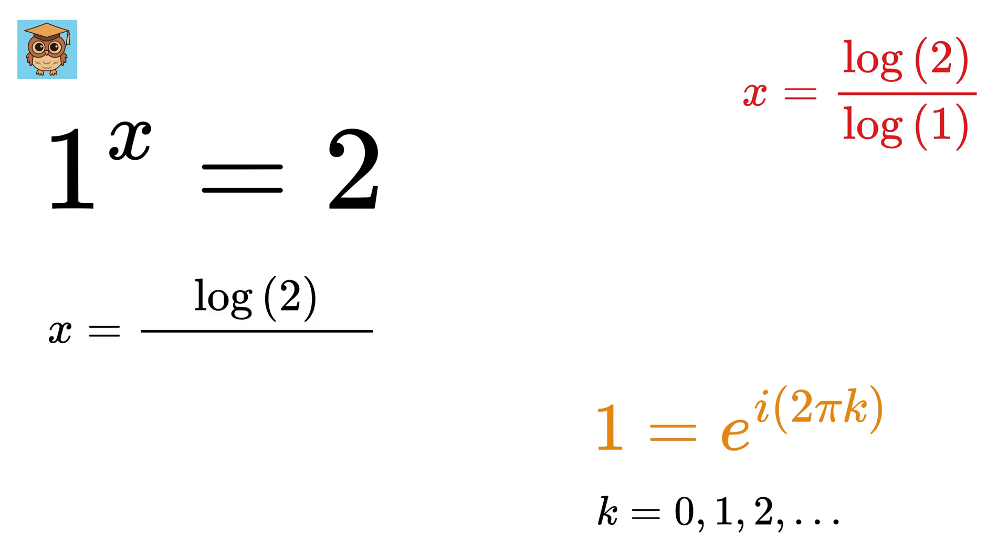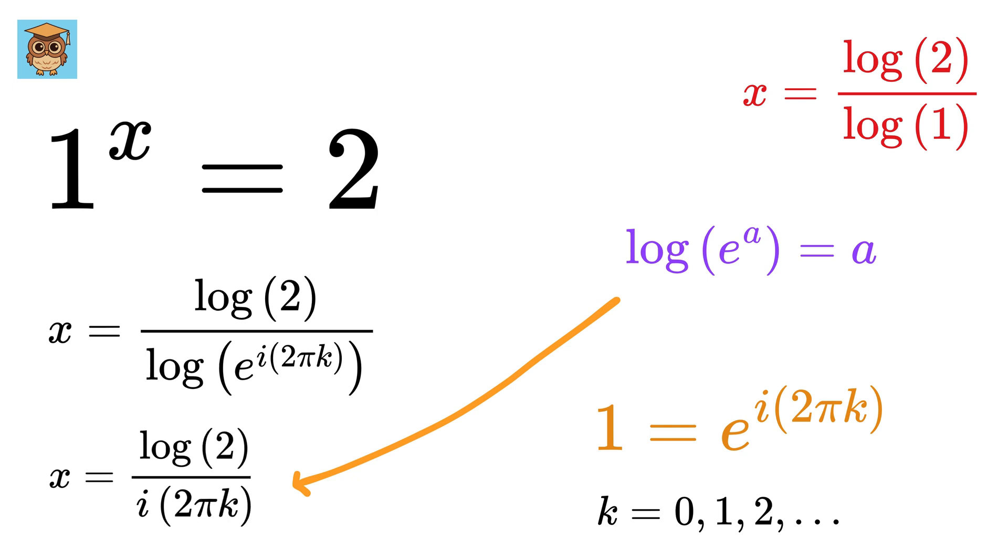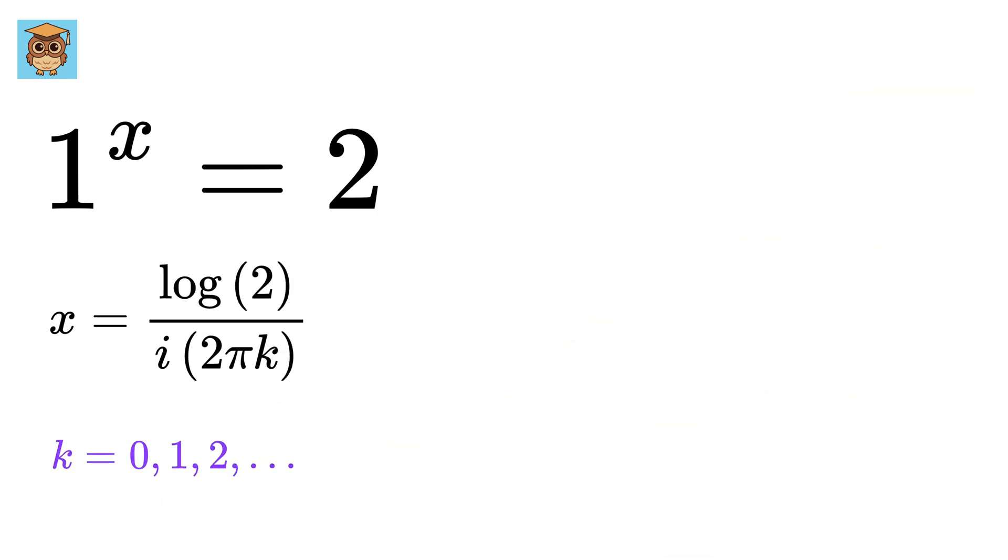So this x becomes log of 2 divided by log of e raised to i times 2k pi. We know that log of e raised to A simply becomes A. So this x becomes log of 2 upon i times 2k pi. So far, so good.